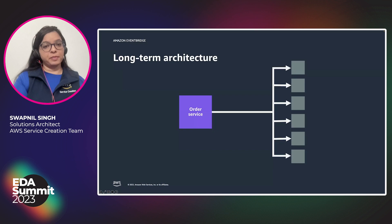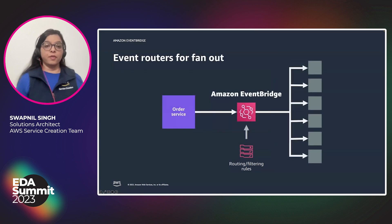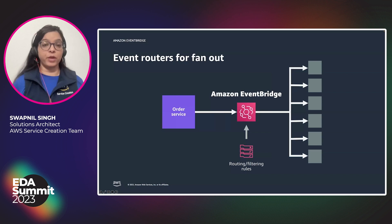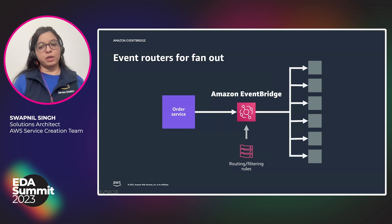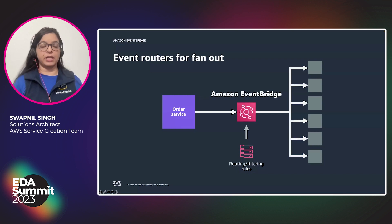This is the problem we are trying to solve with event-driven architectures. With EventBridge, you can create events out of order service that are sent to the corresponding services waiting for data. Some targets may only care about certain types of events from order service, while others care about all events. All of that can be handled using routing and filtering rules within EventBridge.